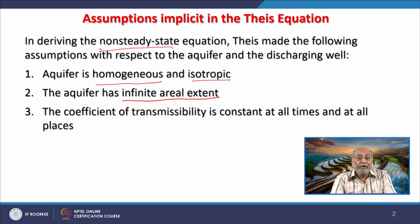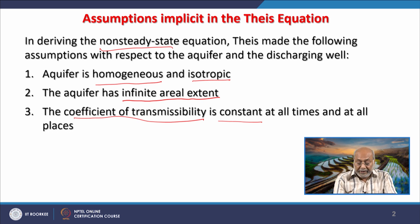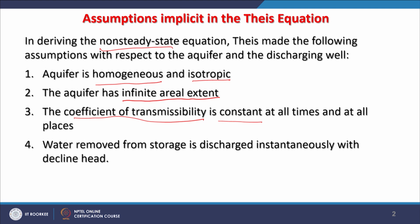The third assumption is that the coefficient of transmissibility is constant at all times and all places. This is a very big assumption, as it assumes our aquifer is homogeneous and isotropic — that is why the coefficient of transmissibility is assumed constant. The fourth assumption is that when water is removed from storage, it discharges instantaneously with a decline in head. As soon as you start withdrawing water, it is assumed that discharge occurs instantaneously with the declining head.